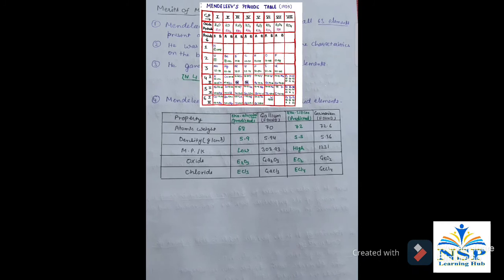Similarly, Mendeleev predictions for eka-silicon is atomic weight 72, which is actual 72.6. Density for prediction 5.5, but actual 5.36. Melting point is very high, which is 1231.